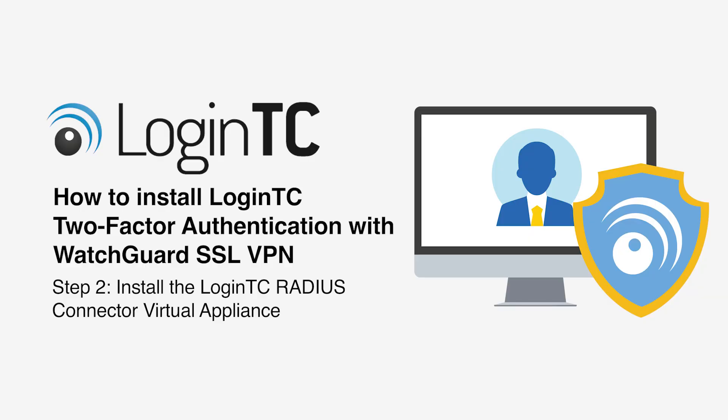Now install and configure the LoginTC RADIUS connector appliance in your virtualization infrastructure. Virtual appliance images are available in OVA and VHD formats for both VMware ESXi and Hyper-V. You should first download the LoginTC RADIUS connector virtual appliance image from the download section of our documentation website. See the video description for a list of relevant links.